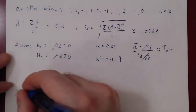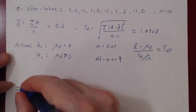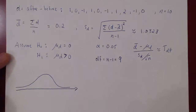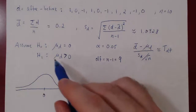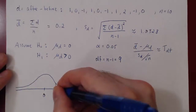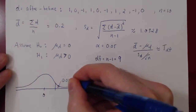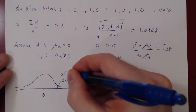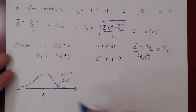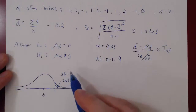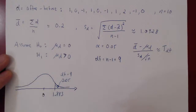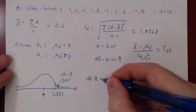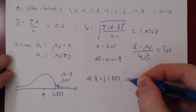We draw the t-distribution, which looks a lot like the z-distribution except it has slightly heavier tails. H1 claims that μ_d is greater than 0, so we have a right-tail test and we reject the largest 5% of values. With 9 degrees of freedom, using the t-distribution table, the t-score where the area above it is 5% is 1.883. So our rejection region runs from 1.883 all the way up to positive infinity.